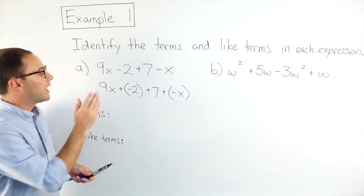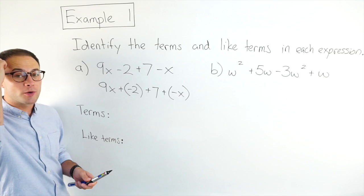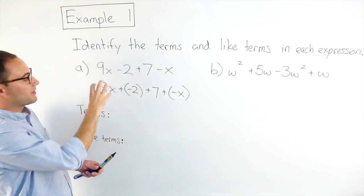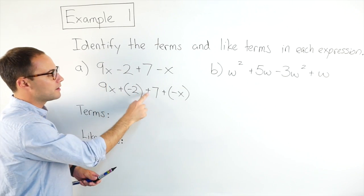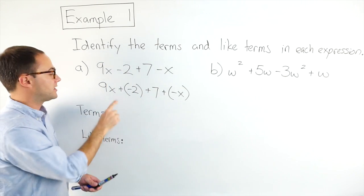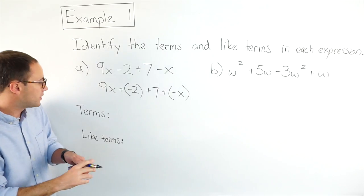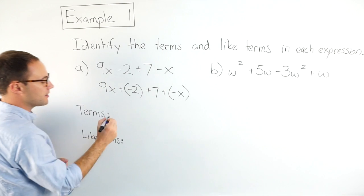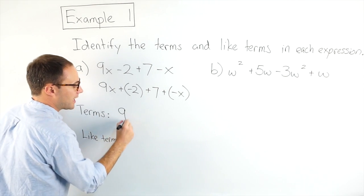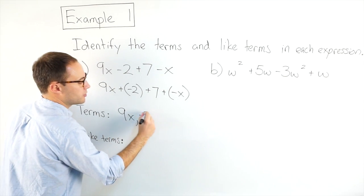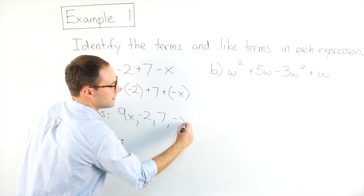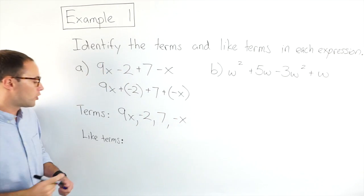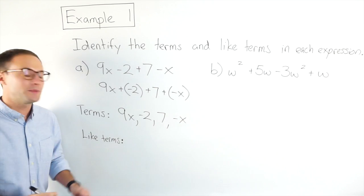Now I'm ready to identify the terms. The terms are the parts of the expression without the operations. So the terms are 9x, negative 2, 7, and negative x. Those are my terms.